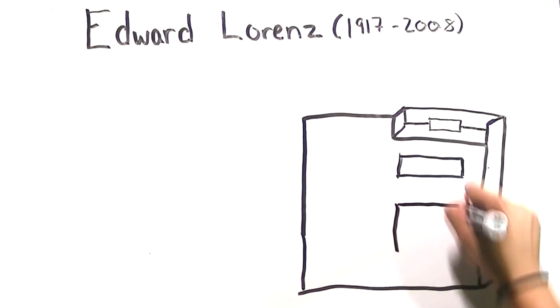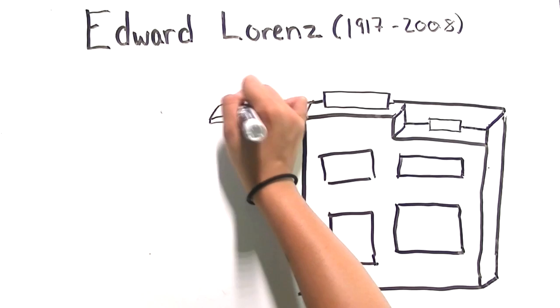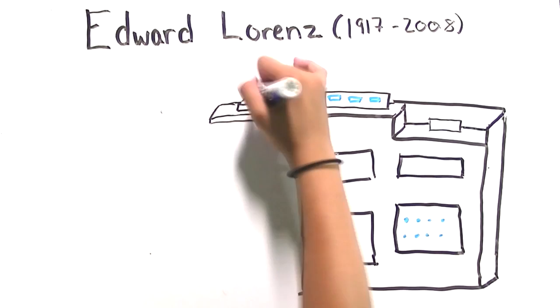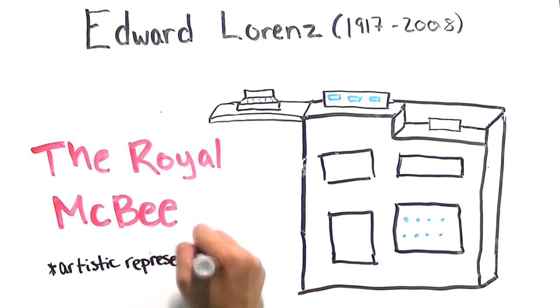They simulated atmospheric convection, which is the movement of hot air to cooler areas. Lorenz entered some numbers for initial conditions, and then the machine printed out calculations which represented the weather.